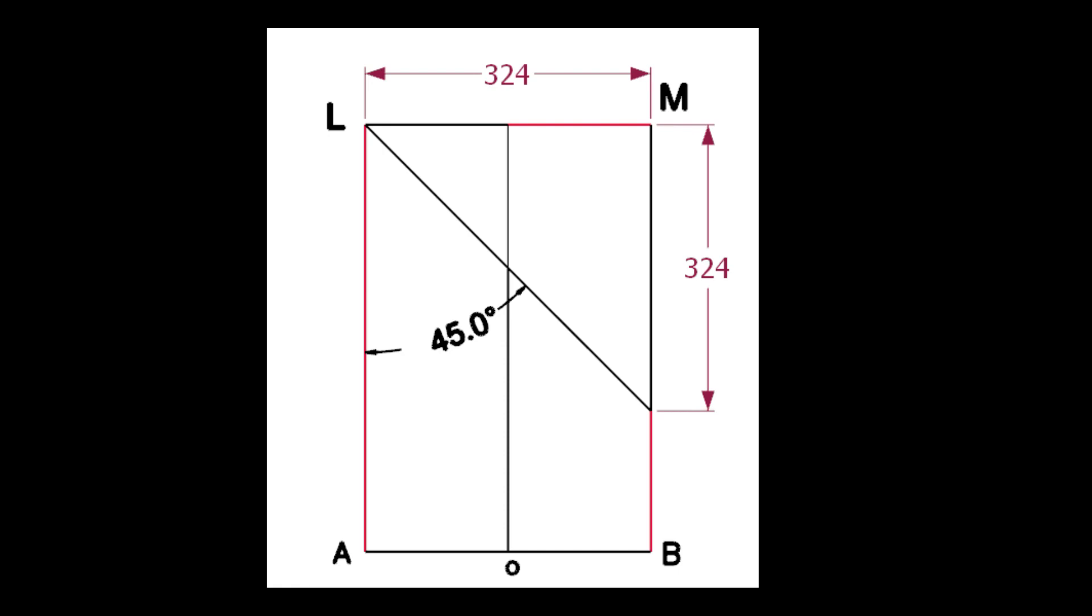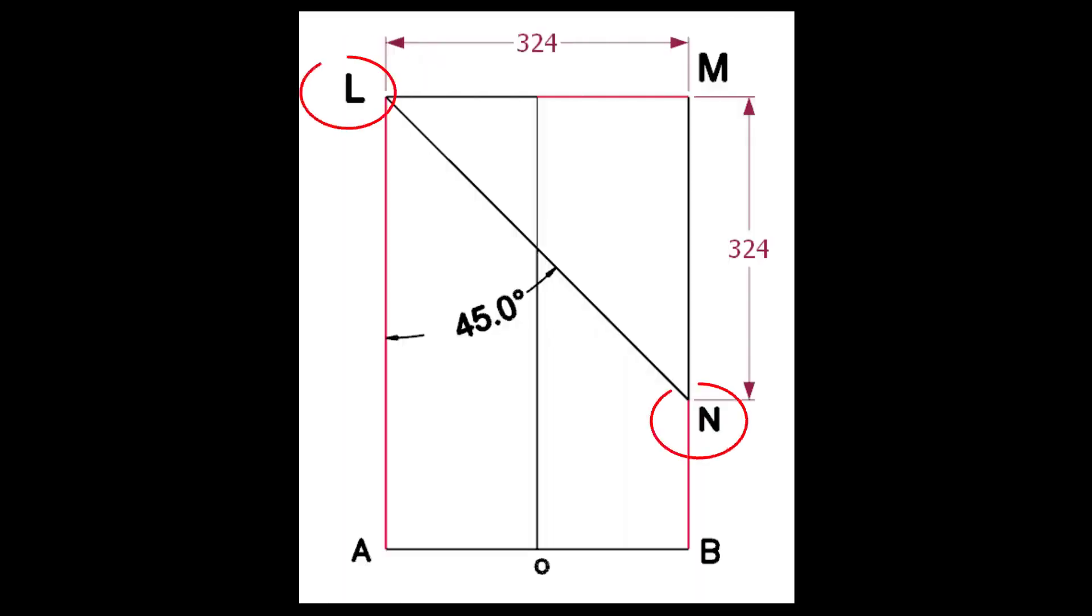Calculate the cutback of the miter. Since the included angle is 45 degrees, the cutback is the same as the pipe OD. Draw the line LN.